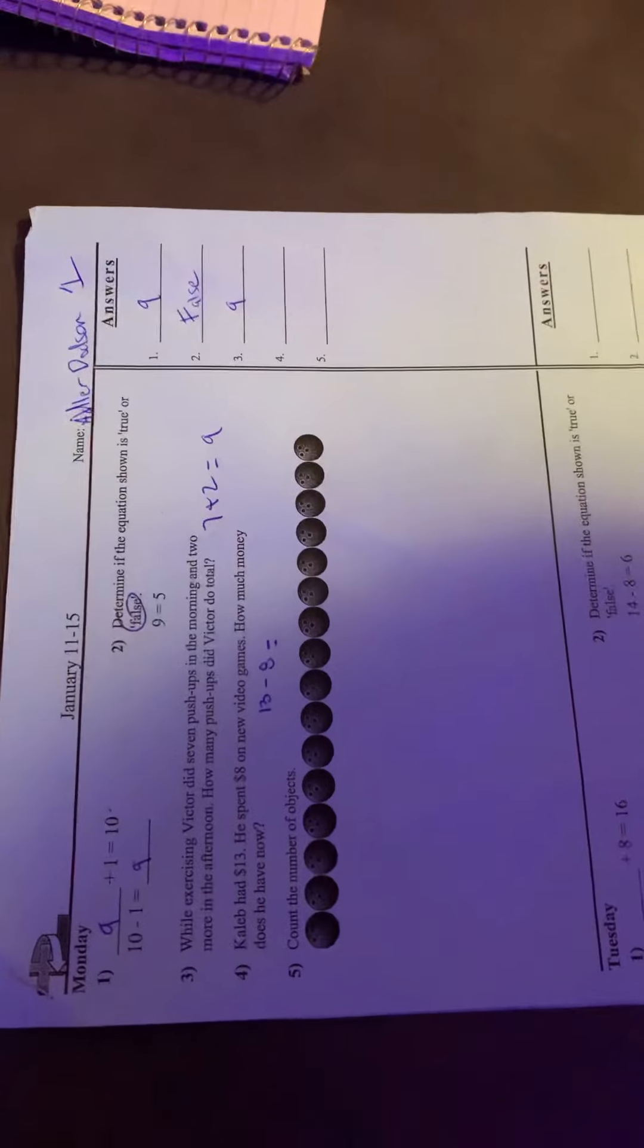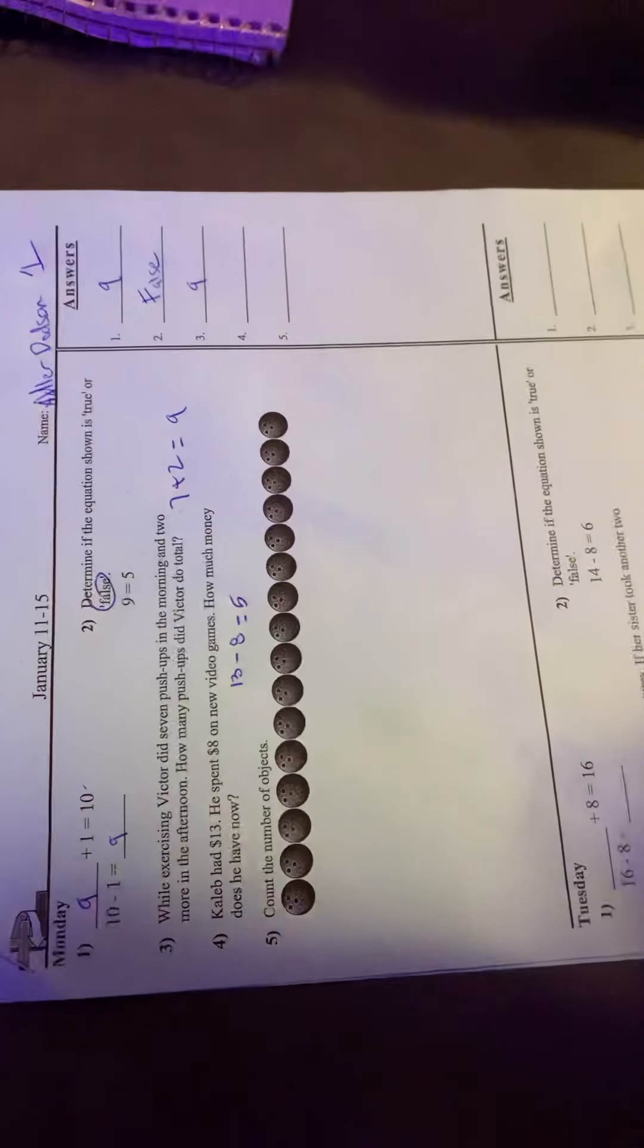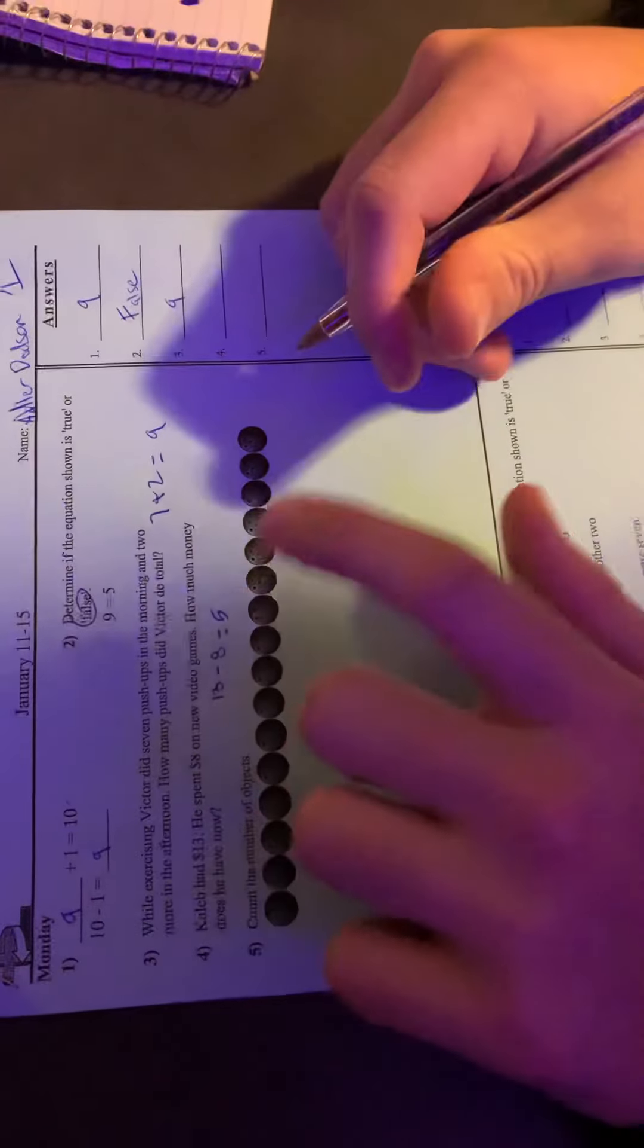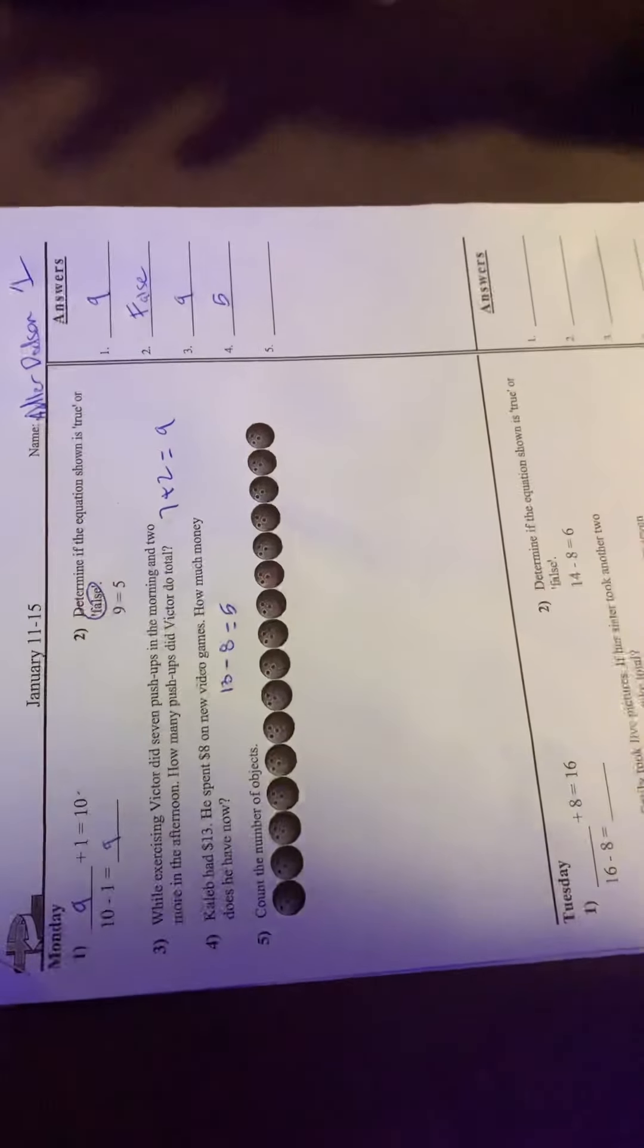13 minus eight is what, Mrs. Dodson? Five. Is that your final answer? Yes. Five. I counted up from eight to get five. Counting up from eight to get five equals 13, so the answer is five. Boom.